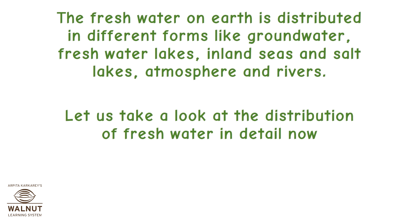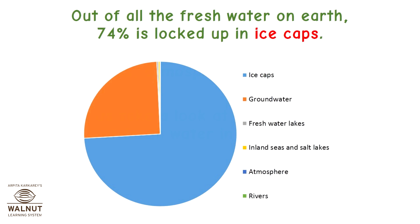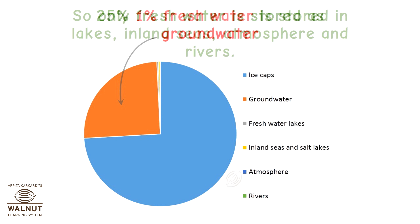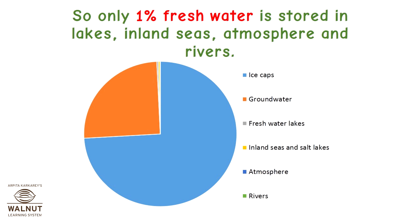Let us take a look at the distribution of fresh water in detail. Out of all the fresh water on earth, 74% is locked up in ice caps. 25% fresh water is stored as groundwater. So only 1% fresh water is stored in lakes, inland seas, atmosphere, and rivers.